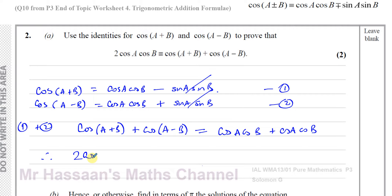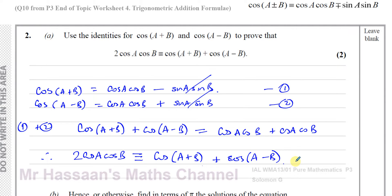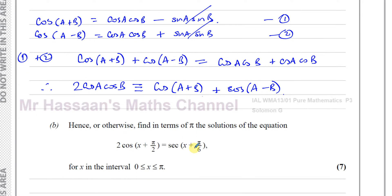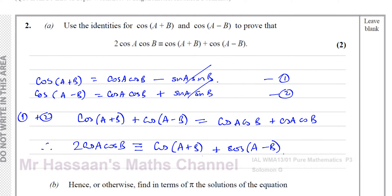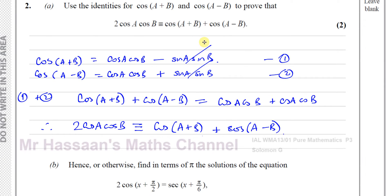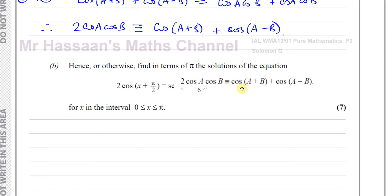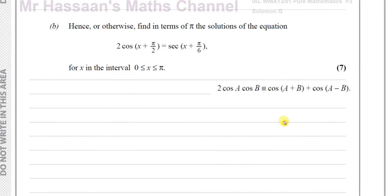Therefore 2cosAcosB is identical to cos(A+B) + cos(A−B). So there we have proved the identity they asked us to prove — that's part A done, pretty simple. Part B says 'hence or otherwise, find in terms of pi the solutions of this equation.' The word 'hence' means we have to use our result from part A, so I'll keep that result in mind as I work through part B.